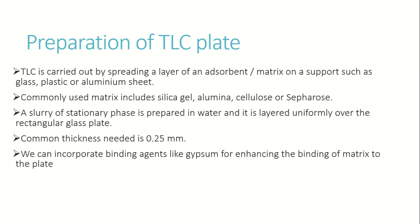In paper chromatography, cellulose is used as in sugar chromatography. In TLC, the matrix used is silica gel, alumina, or sepharocellulose, which are available in biological comments. In this matrix, we spread a particular material uniformly on a particular plate.